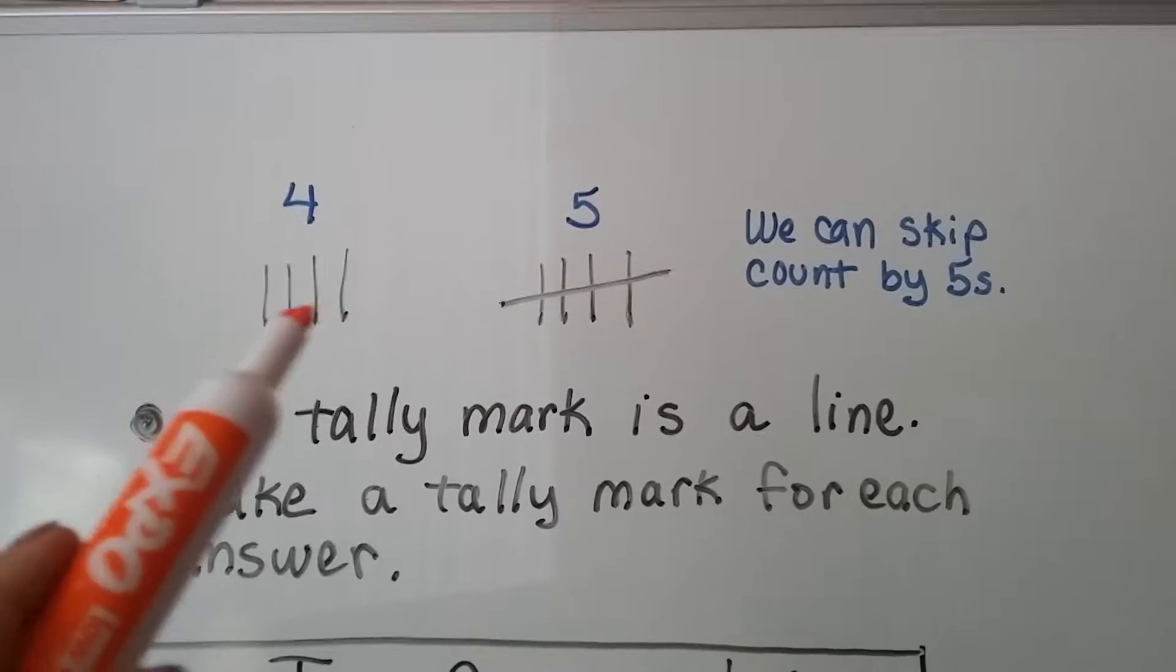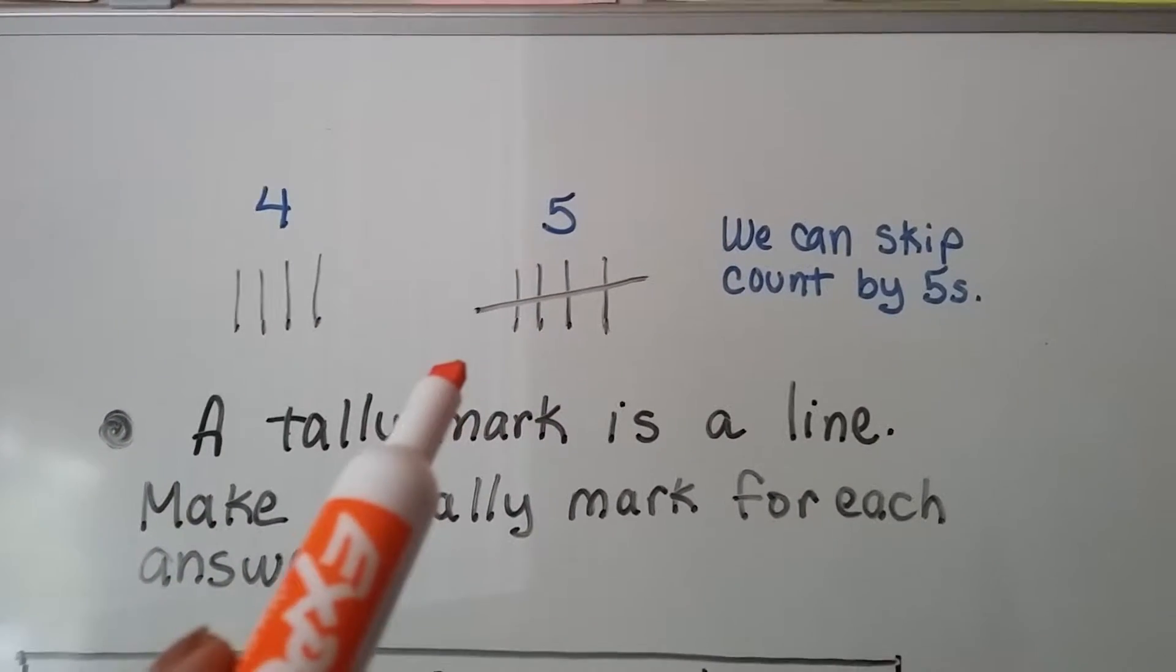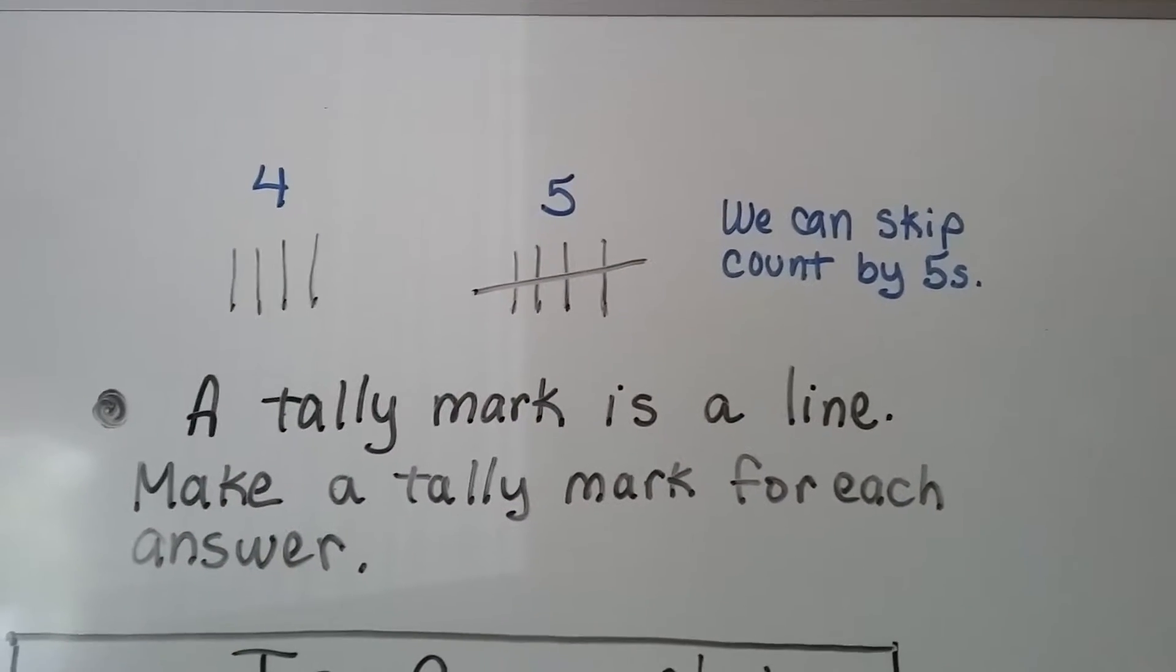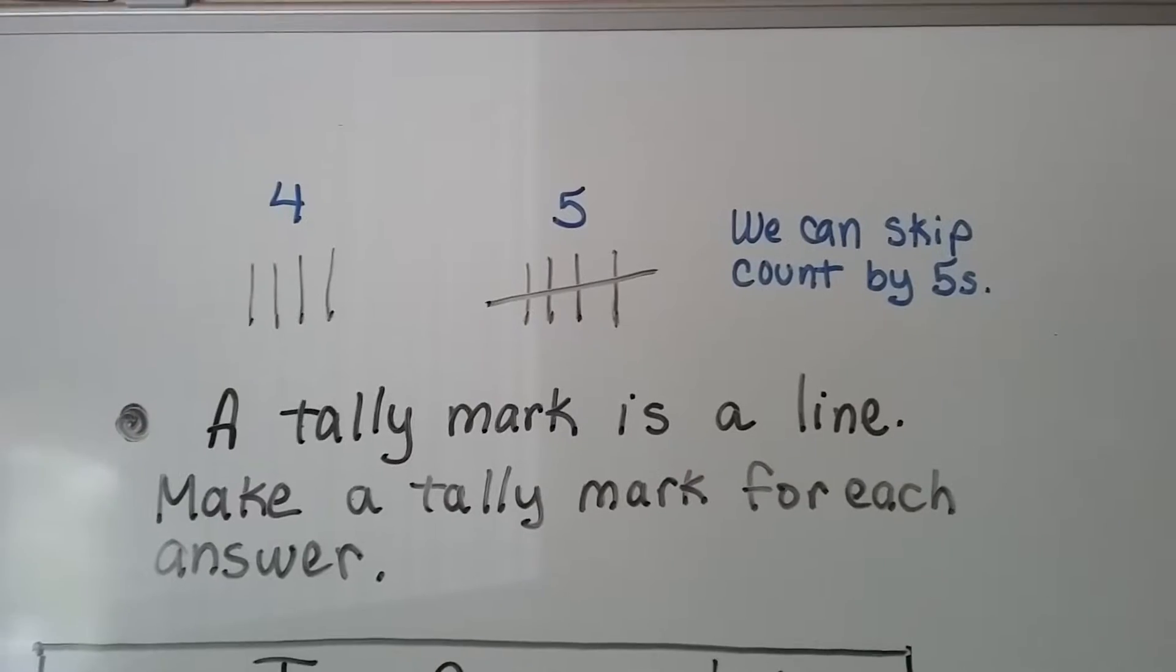Once you get to four tally marks and you want to make the fifth tally mark, you cross the four. You put a cross across it. That way you can skip count by fives when you count your tally marks.